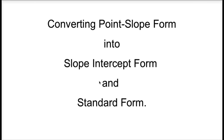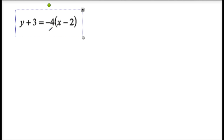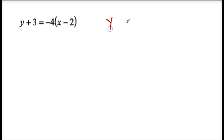We're going to be converting point slope form into slope intercept form and standard form. Point slope form is in the form y minus y sub 1 equals m, the slope, times the quantity x minus x sub 1.